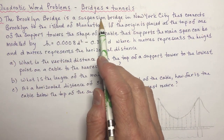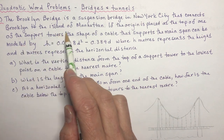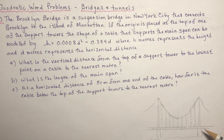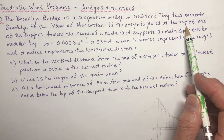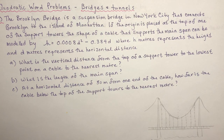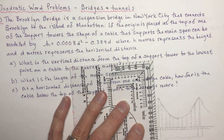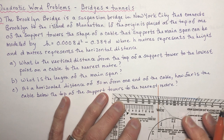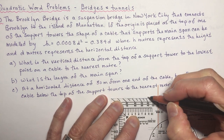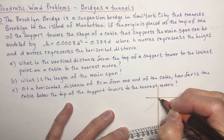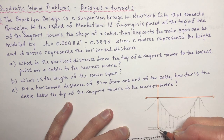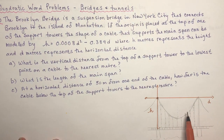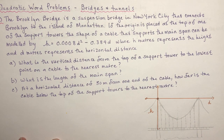The Brooklyn Bridge is a suspension bridge in New York City that connects Brooklyn to the island of Manhattan. If you don't know what a suspension bridge is, this is what they look like. If the origin is placed at the top of one of the support towers — the origin is just where it is at zero-zero on the axis — here's my axis, here's the origin. Height is on this axis and horizontal distance is on this one.